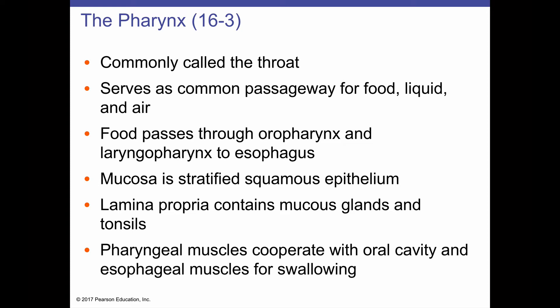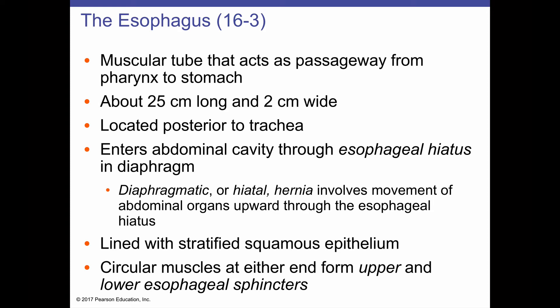The muscles of the pharynx cooperate with the oral cavity and the muscles of the esophagus in the swallowing reflex, which we'll discuss shortly. The esophagus is a muscular tube that connects the pharynx to the stomach. It is about 25 centimeters long and only two centimeters wide. In fact, it's often collapsed unless food is passing through it, so the lumen is not obvious unless a bolus is making its way down.